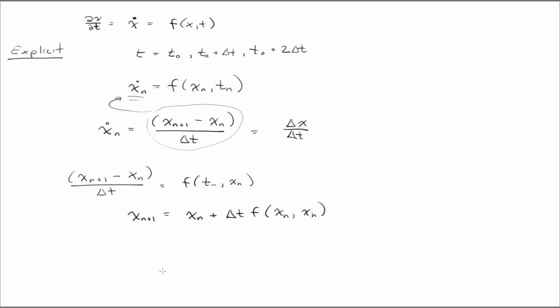So, with this, we can write down plainly the solution at x n plus 1 based on things at x n, right?